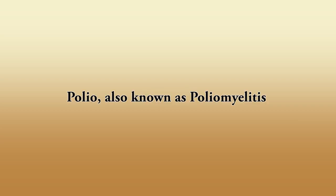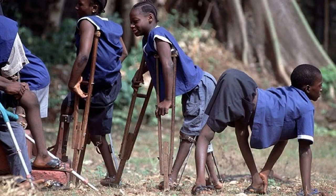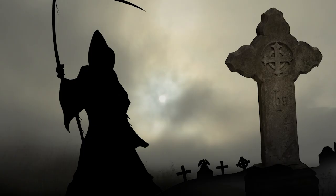Polio, also known as poliomyelitis or infantile paralysis, is a highly contagious viral infection that can lead to paralysis, breathing problems, or even death. It is caused by the poliovirus. In its most debilitating forms, polio displays symptoms such as paralysis and death.